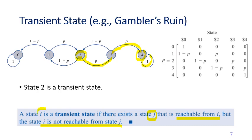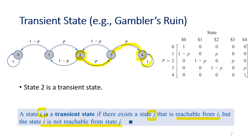In other words, a transient state is one where you are temporarily there, but once you leave, there is a possibility you may not be able to return. State 1 and state 3 are also transient states for the same reason — there is a possibility you leave those states and may never be able to come back.